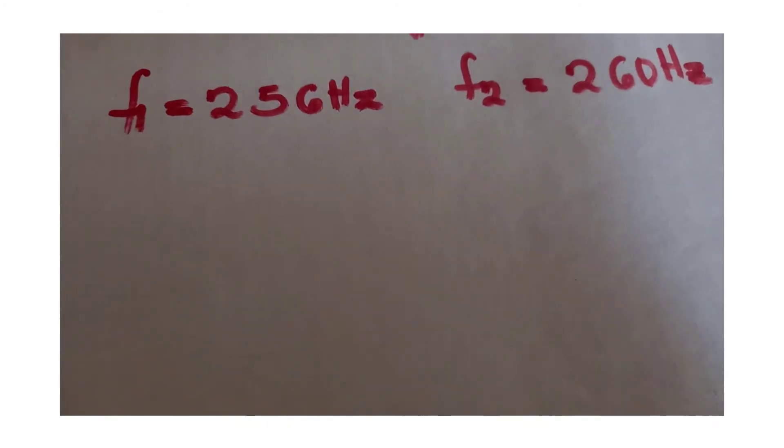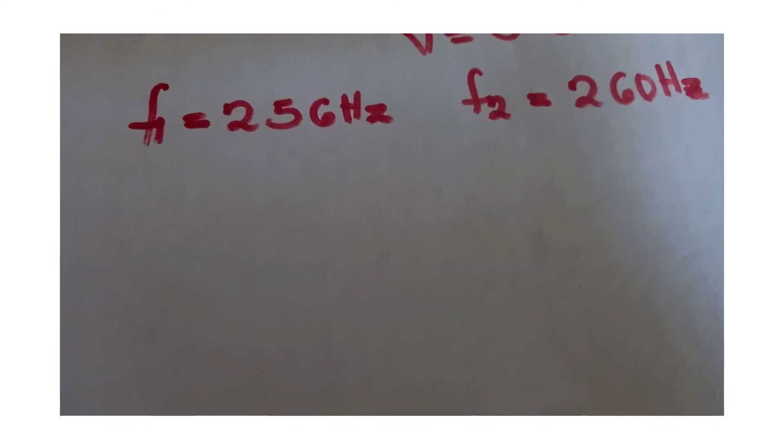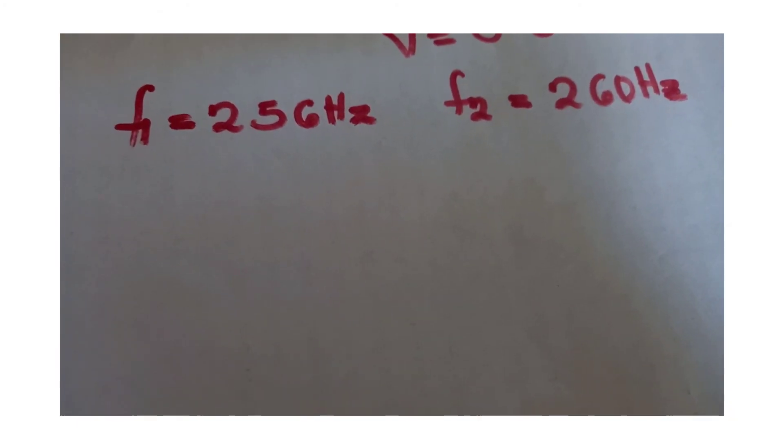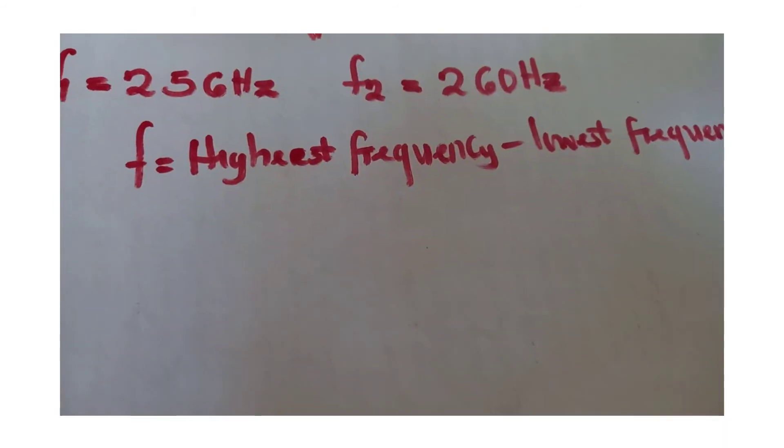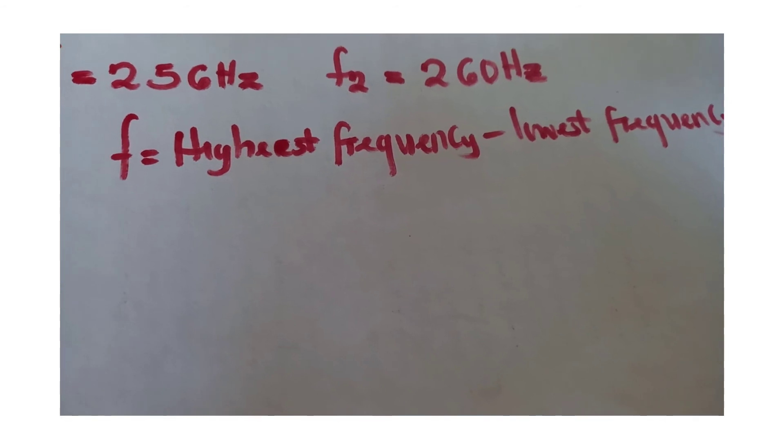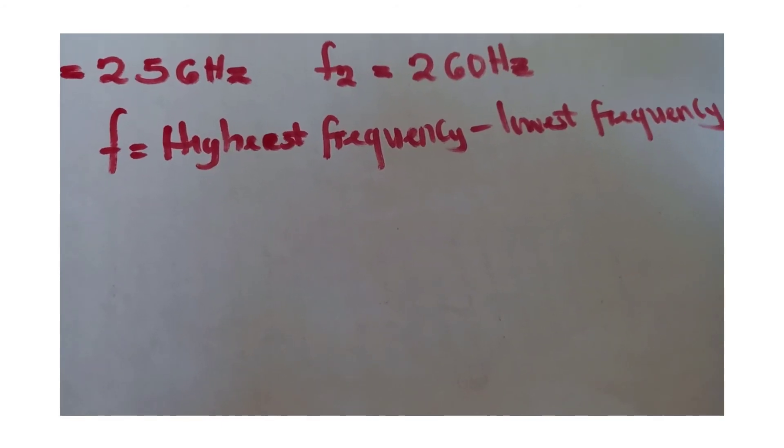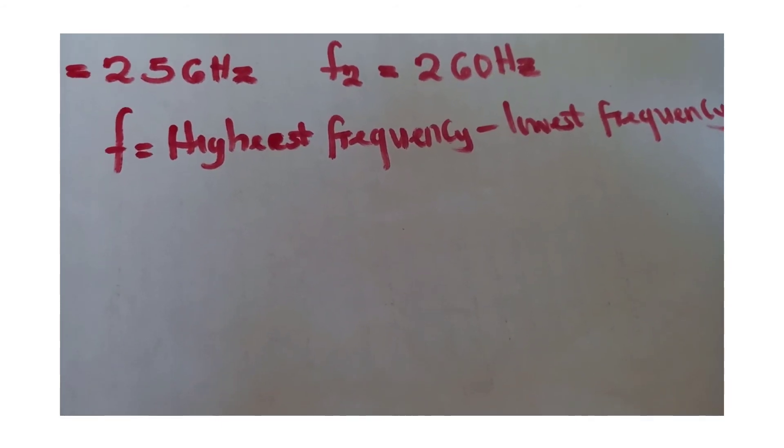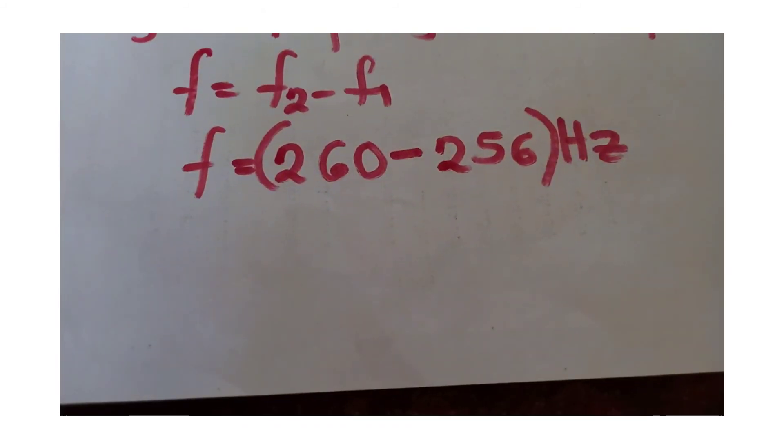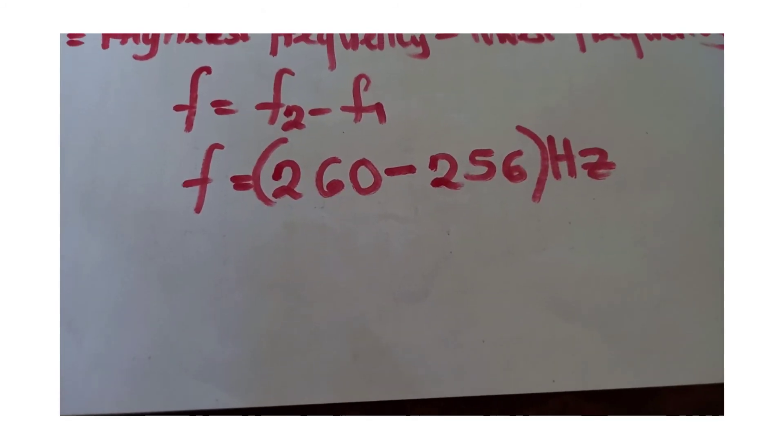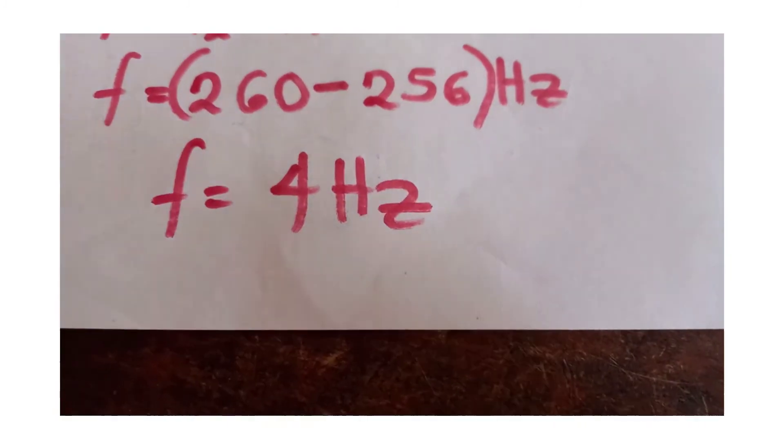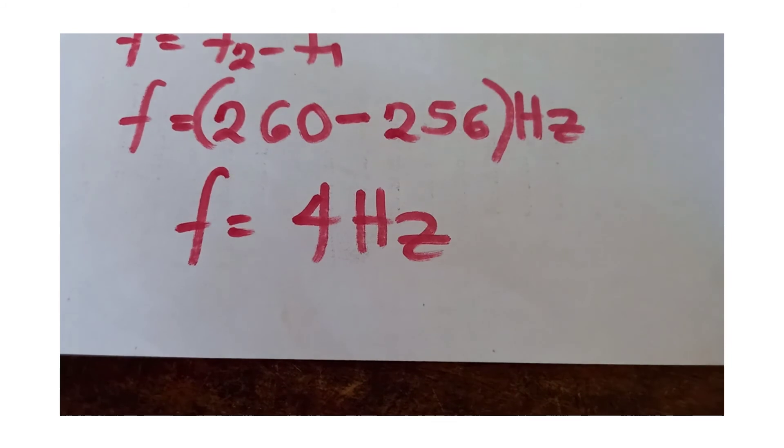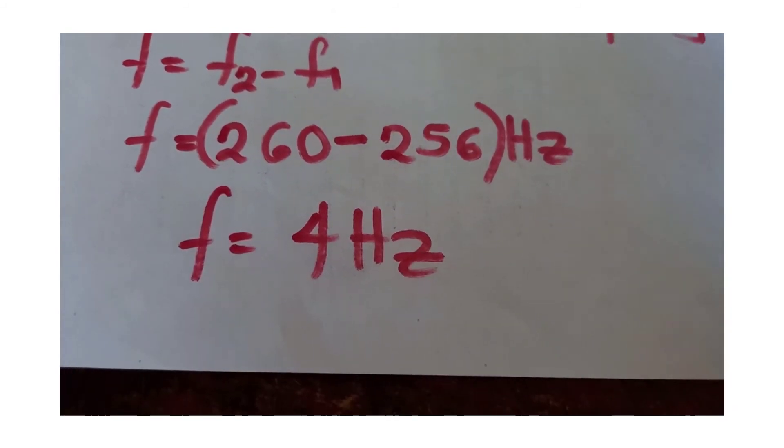We have two values of frequency: 256 Hz and 260 Hz. What we do is subtract the higher frequency minus lower frequency. So 260 minus 256 gives us 4 Hz. So the value of the frequency is 4 Hz.